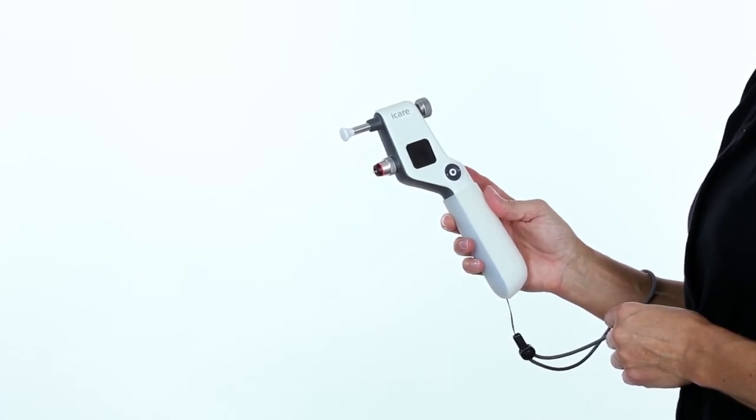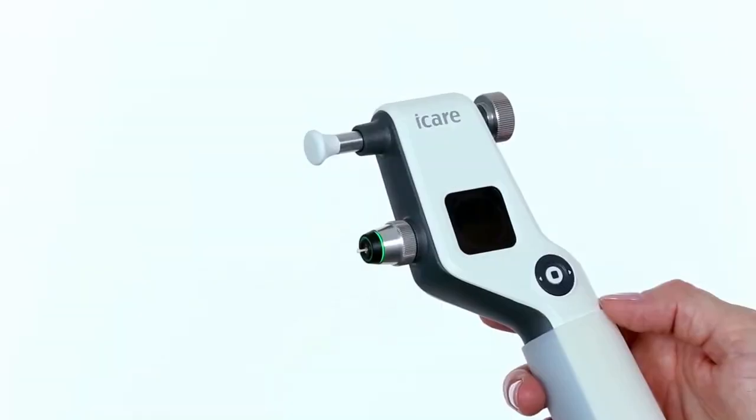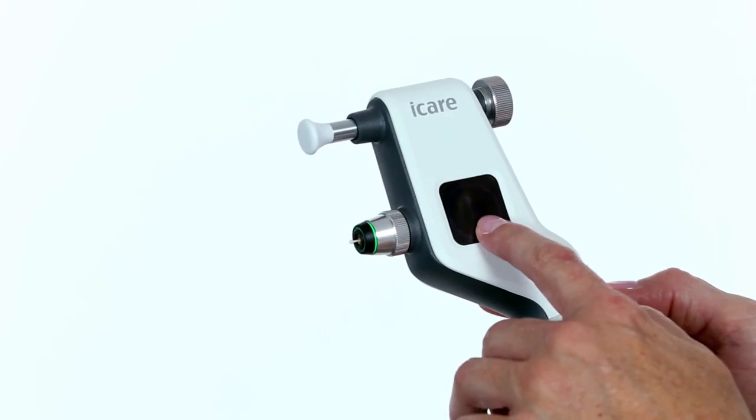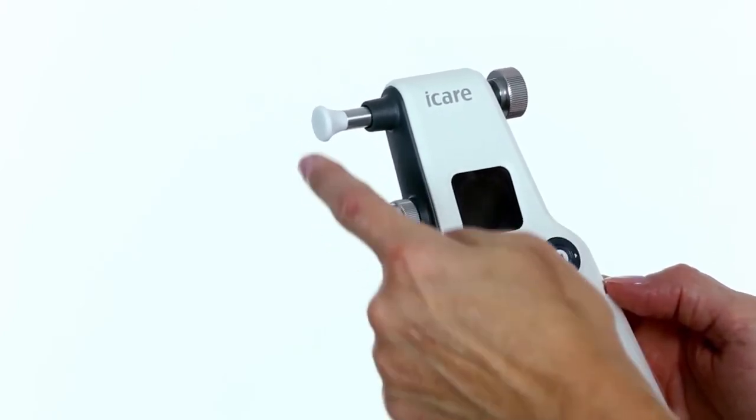The probe will automatically magnetize and it will not fall out. The tonometer is ready to take a measurement when the blue play symbol appears on the display.